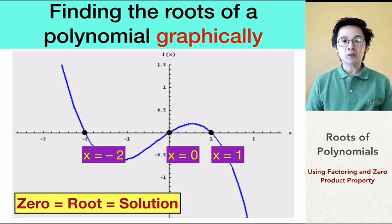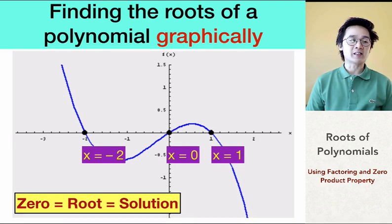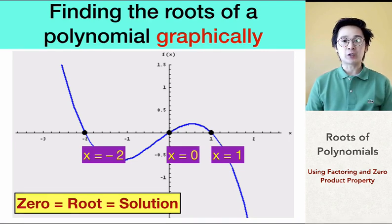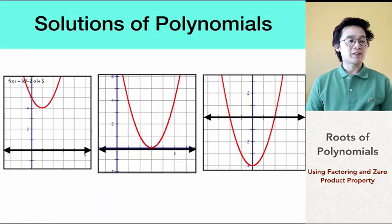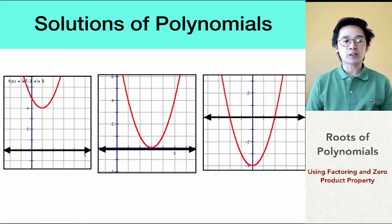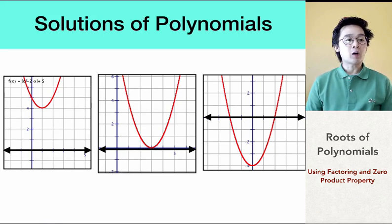The points of intersection of the graph along the x-axis are what we call the roots, zeros, or solutions of a polynomial. So in this particular polynomial, we have three roots: negative two, zero, and one. Not all polynomials will look exactly the same. Sometimes we'll have polynomials similar to these parabolas, or graphs of a quadratic equation.